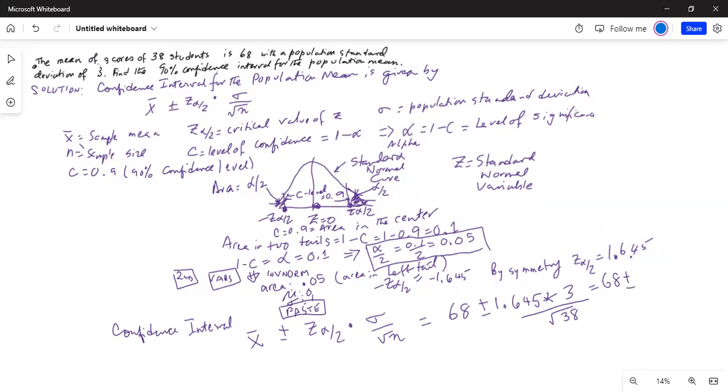We can do the second term separately. How will I do it in my calculator? 1.645 times 3 divided by, how do I get the square root? I press the second button, then x square. 1.645 times 3 divided by second button and x square gives me the square root. Inside the square root, I type in sample size of 38. So this is 68 plus minus 0.8.